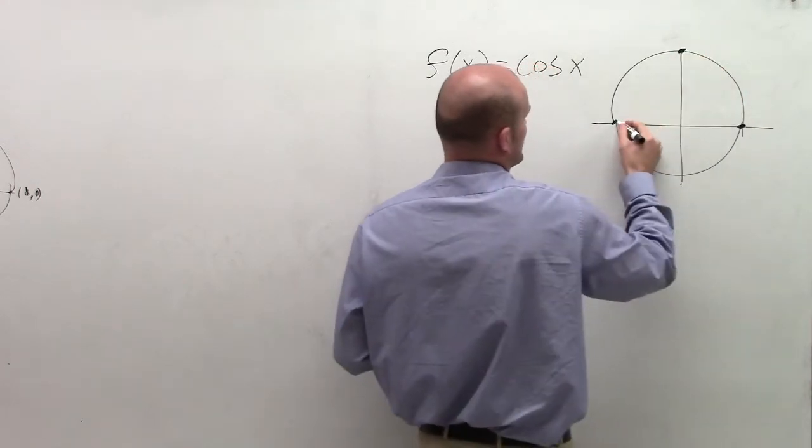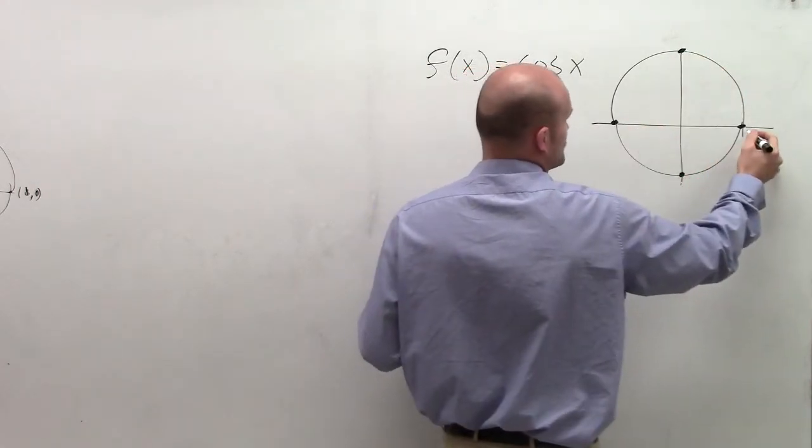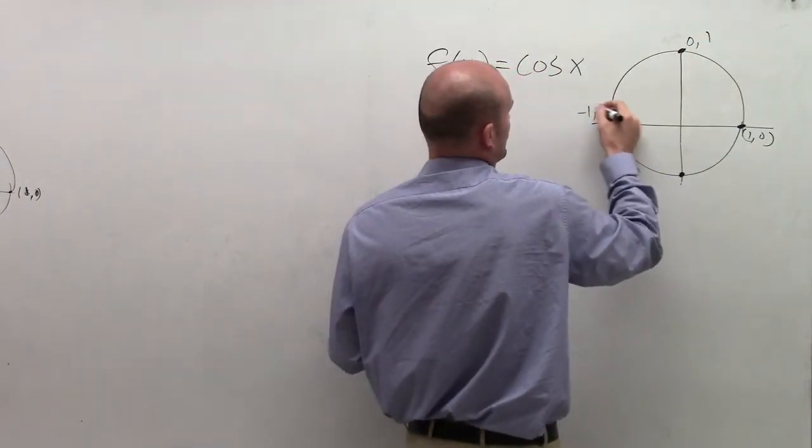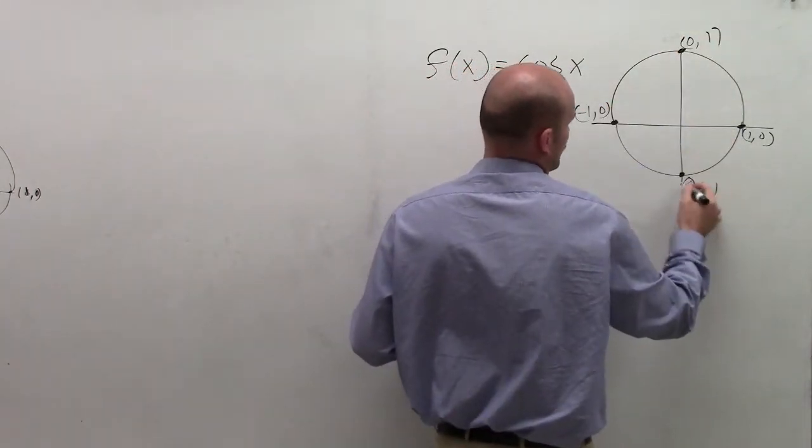Remember there's some important points that we have for certain angles, which we have (1,0), (0,1), (-1,0), and (0,-1).